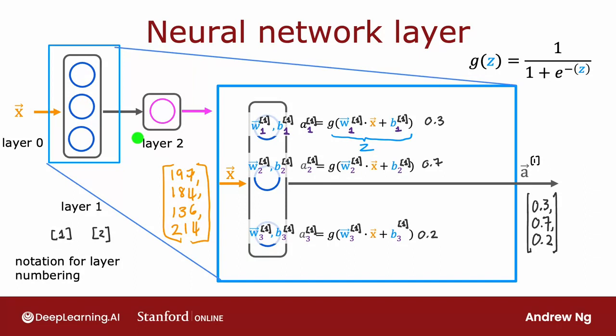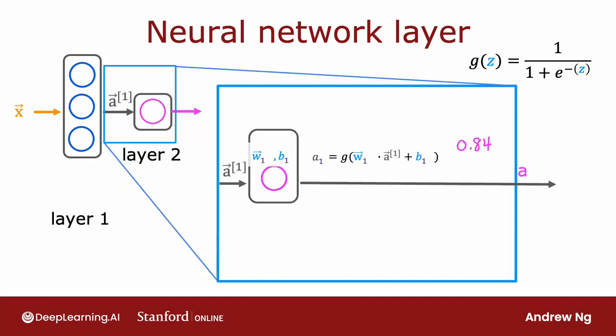This output a superscript square bracket one becomes the input to layer two. Let's zoom into the computation of layer two, which is also the output layer. The input to layer two is the output of layer one — the vector [0.3, 0.7, 0.2] we just computed. Because the output layer has just a single neuron, it computes a subscript one — the output of this first and only neuron — as g, the sigmoid function, applied to w subscript one